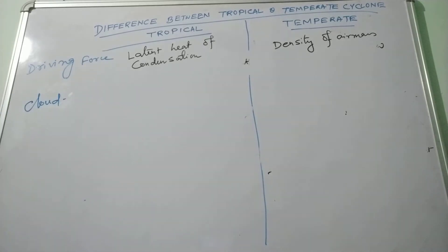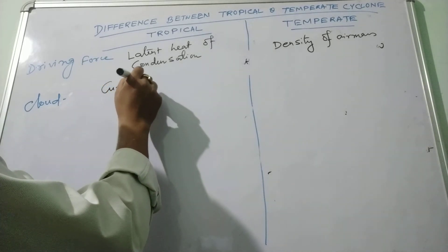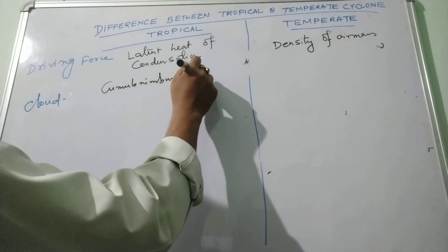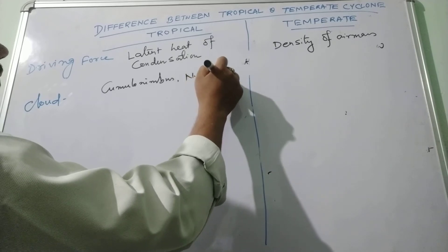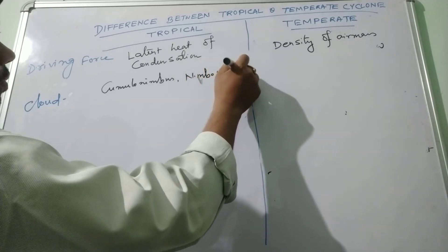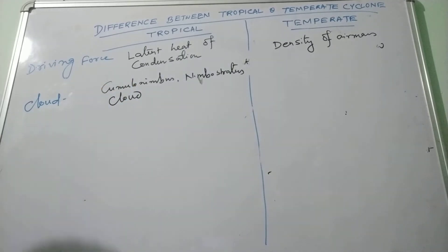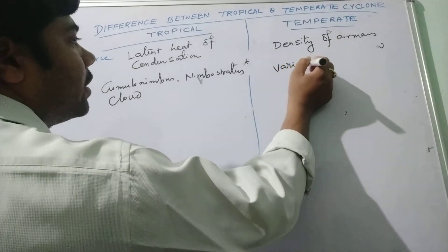Cloud pattern. In tropical cyclone that exhibits cumulonimbus cloud, nimbus or nimbostratus cloud. In temperate cyclone, various types of clouds are found at various elevations.